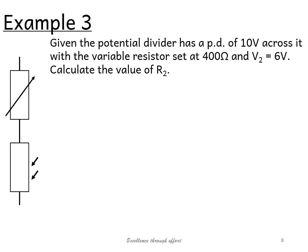Let's look at a different example. Given the potential divider has a potential difference of 10 volts across it with a variable resistor set at 400 ohms and V2 is equal to 6 volts, calculate the value of R2. Now there is more than one way to do this question. You can do this using Ohm's law, and if you can figure it out, brilliant. Send a copy to me so I can check it's correct. I'm going to show you using that ratio equation that we had.